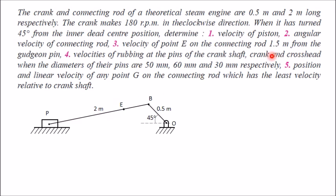We also need to find the velocity of point E on the connecting rod, where PE equals 1.5 meters, as well as the velocities of rubbing at the pins O, B, and P. Finally, we must determine the position and linear velocity of any point G on the connecting rod that has the least (minimum) absolute velocity. For all this, we first require the angular velocity of the crank.